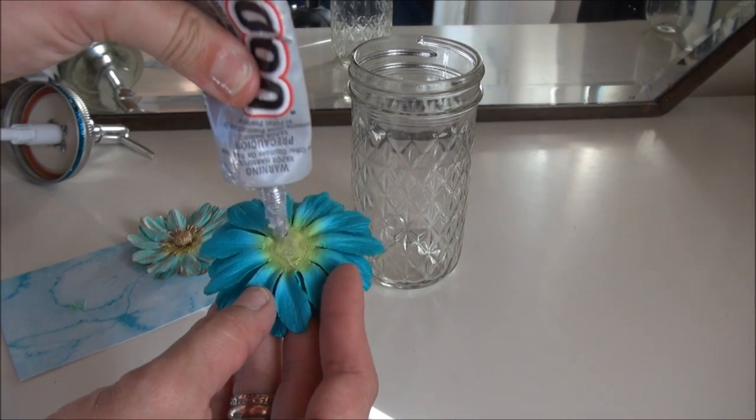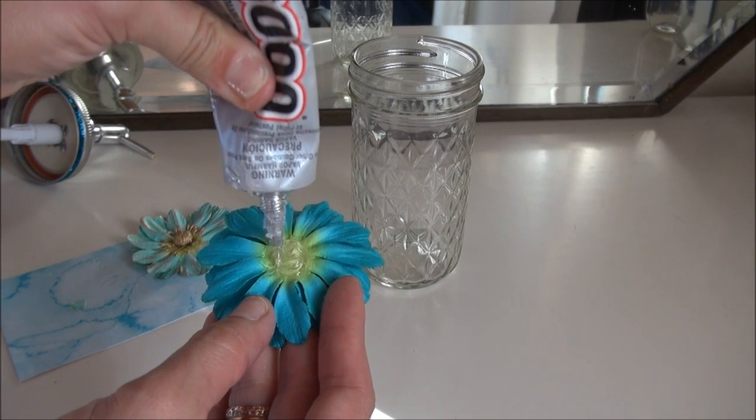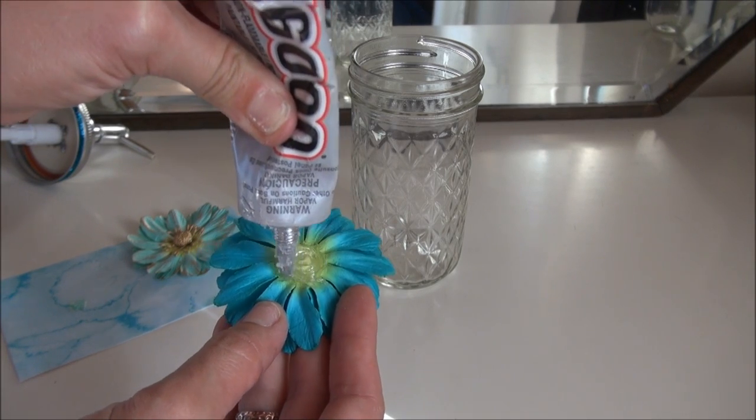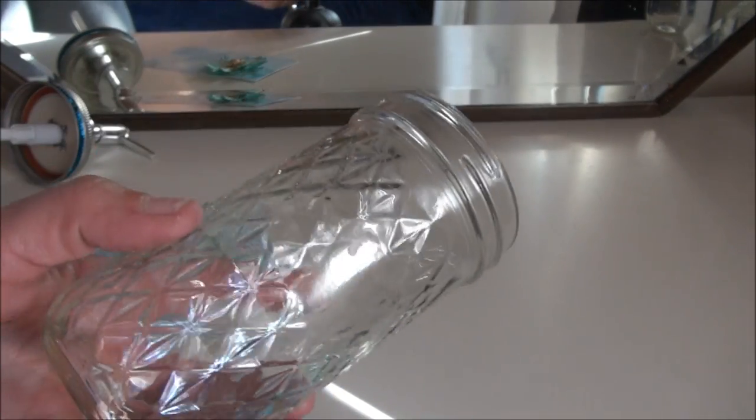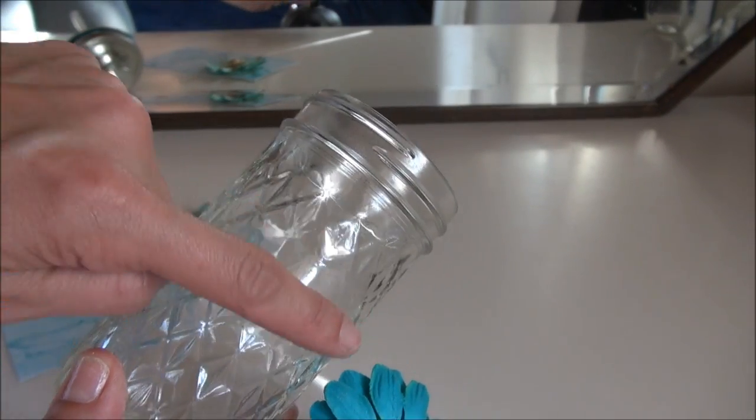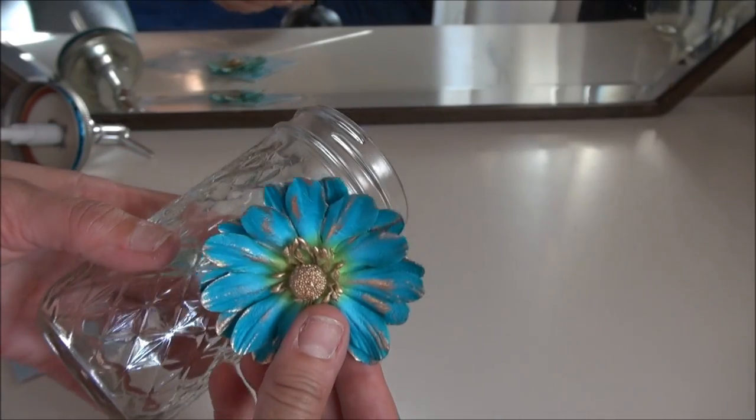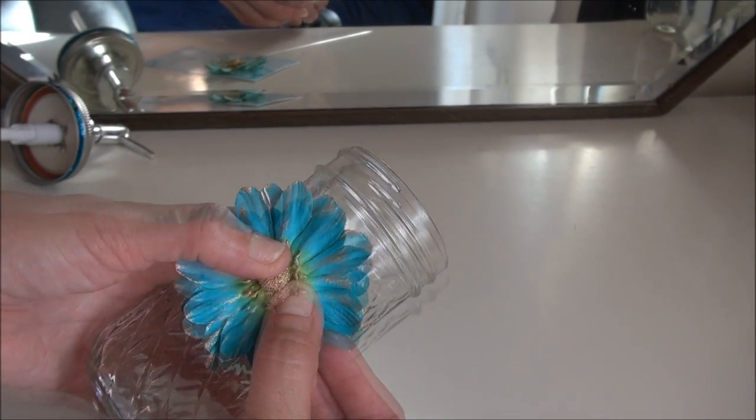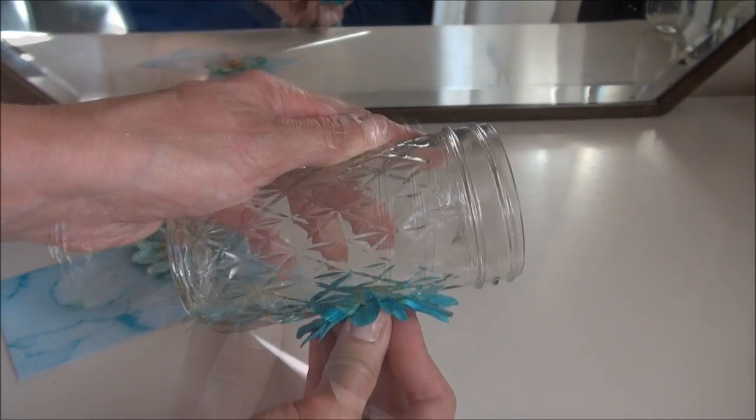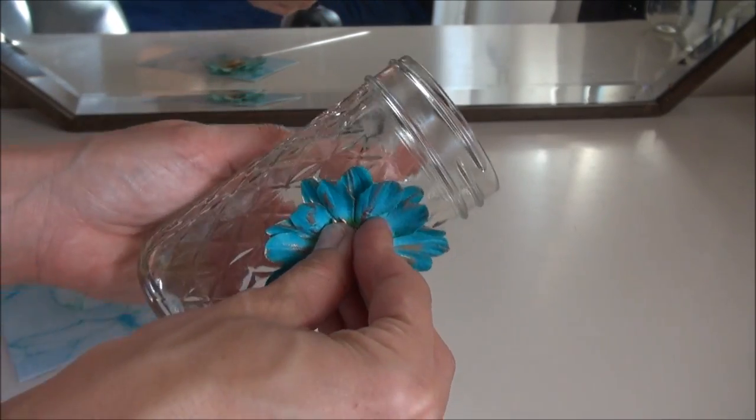Just put a little dab of glue on the back. This jar actually has a little spot where it's smooth, so I'm going to put it right in the middle and press it down. So just let that sit.